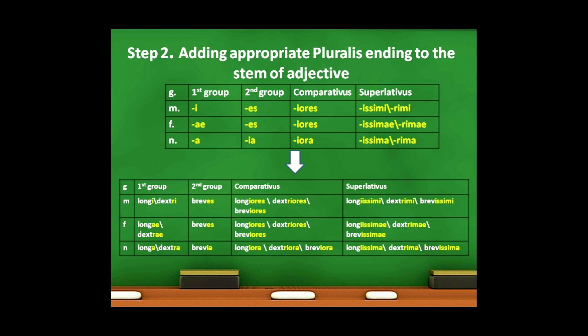Superlativus. Masculinum pluralis — longissimi, dextrimi, brevissimi. Femininum pluralis — longissimae, dextrimae, brevissimae. Neutrum pluralis — longissima, dextrima, brevissima.